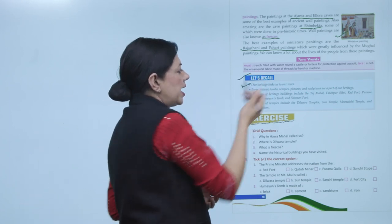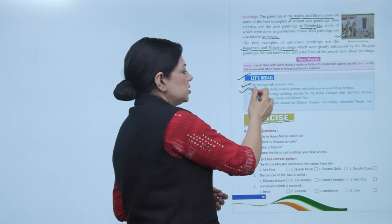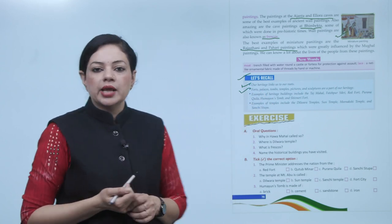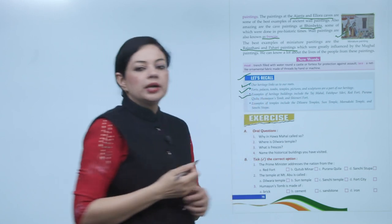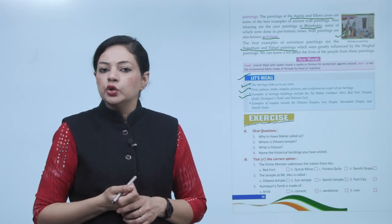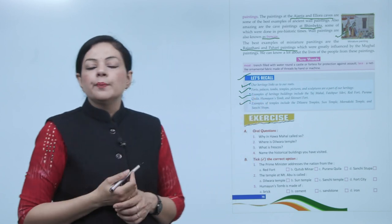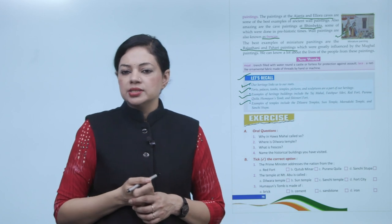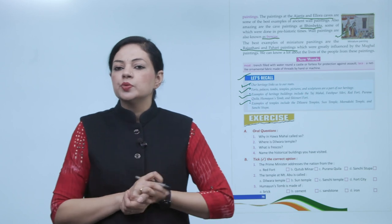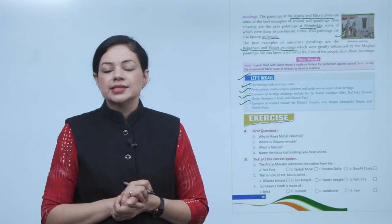Now let us recall the chapter. Our heritage links us to our roots. Forts, palaces, tombs, temples, pictures and sculptures are a part of our heritage. Examples of heritage buildings include the Taj Mahal, Fatehpur Sikri, Red Fort, Purana Kila, Humayun's Tomb and Shivneri Fort. Examples of temples include the Dilwara Temple, Sun Temple, Meenakshi Temple and Sanchi Stupa. This is the chapter — I hope you have understood it. You have to read it once again and do the practice of exercises yourself.